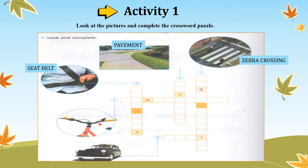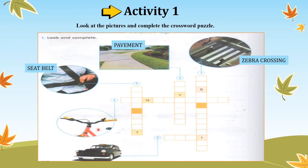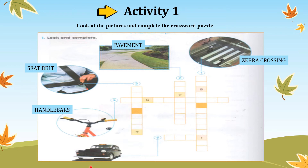Number 4 — what do we call this thing? We have to make sure that we put both hands on this. They are called handlebars. And the last one is very easy. What do we call this thing? It is a taxi. Good job, everyone!